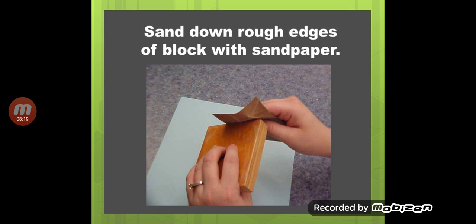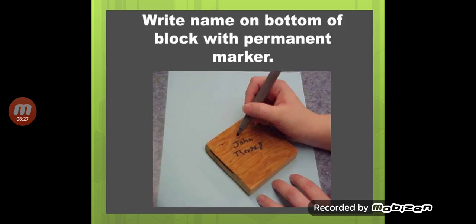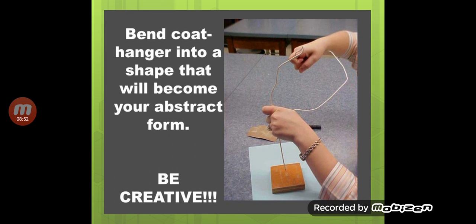Coming towards your practical work — first, sand down the rough edges of the block with sandpaper. Take a wooden block and rub it with sandpaper to make it smooth. I will show you a very simple kind of piece that you will develop. Write your name on the bottom of the block with a permanent marker so we can identify your art piece.